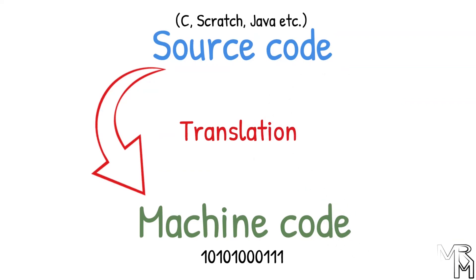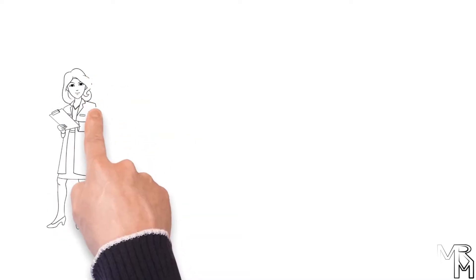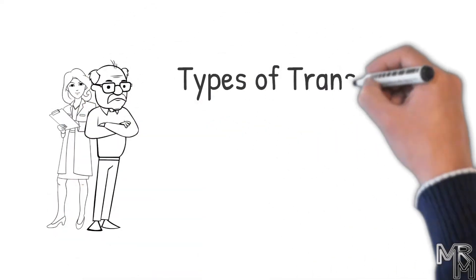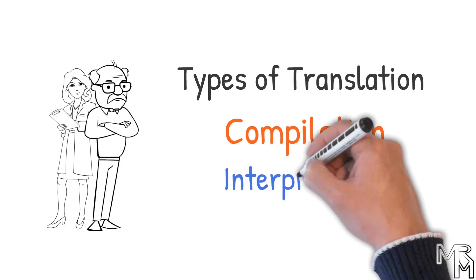So far, so good? Now, to make it a bit more complicated, we humans have invented two different types of translation, namely compilation and interpretation.